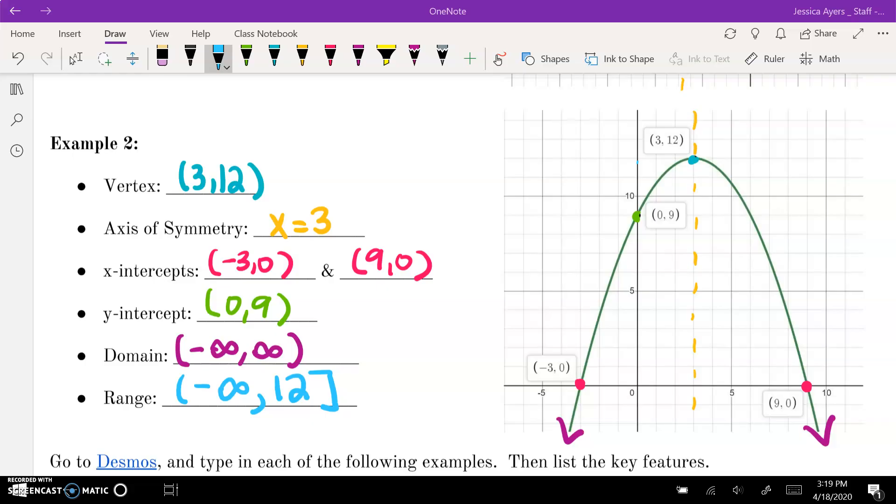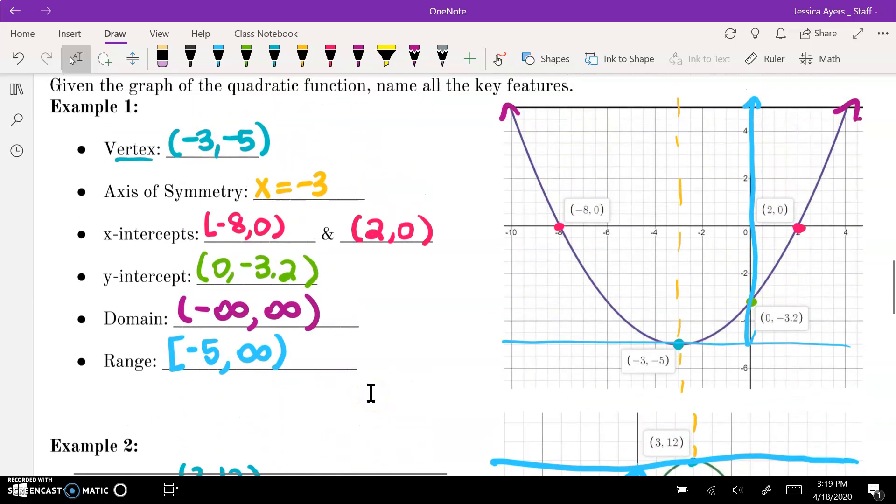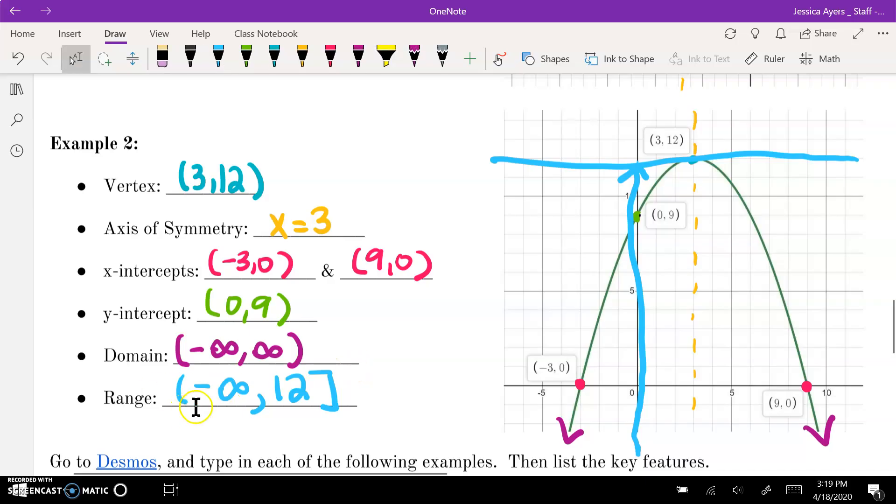The range here is a little bit tricky, because now we have a maximum point. So that means our graph is going to stop at this point up here. So it's going to start down here and come all the way up to 12. So that means we go from negative infinity to positive 12. So it flips. If we have a minimum vertex, it goes from the vertex to infinity. But if we have a maximum vertex, it goes from negative infinity to the vertex.